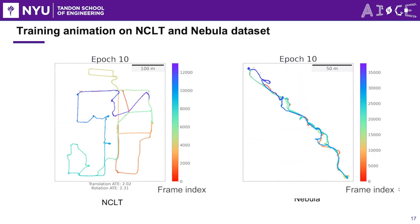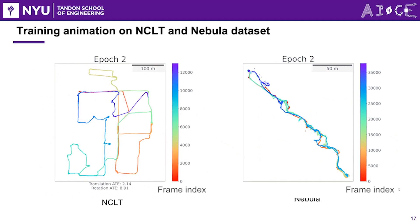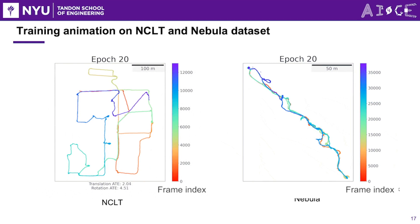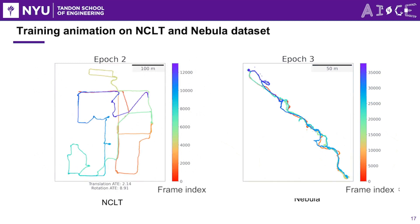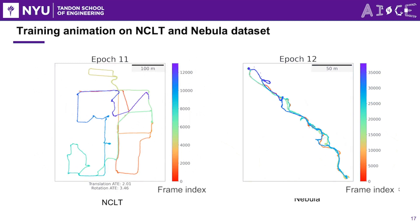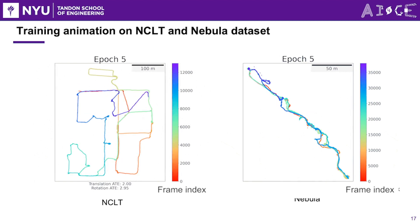We conducted similar tests on the NCLT and Nebulae datasets. However, we did not provide ATEs for the Nebulae dataset, due to the high-level noise present in the kinematic odometry provided by the Nebulae datasets. Fortunately, DeepMapping 2 is capable of further optimizing the pose estimated by the kinematic odometry, allowing us to overcome the challenges posed by the noisy odometry and obtain more accurate results.